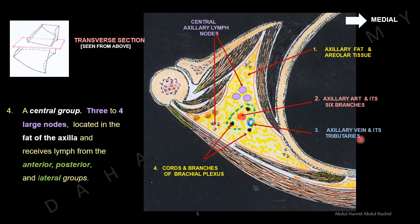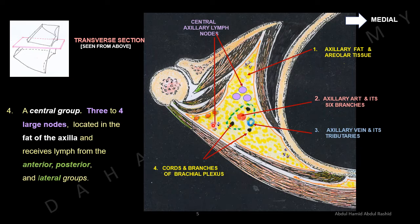Number four: the central group. Looking at a horizontal section of the right axilla, with its anterior wall, posterior wall, and medial wall visible, the central group of the axilla consists of three to four large lymph nodes located in the fibro-fatty tissue of the axilla. They receive lymph from the anterior, posterior, and lateral groups.